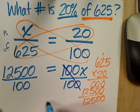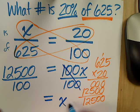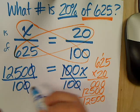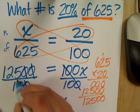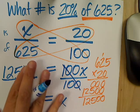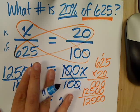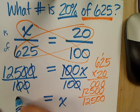My 100 over 100 becomes 1, so I'm left with X here. And then use that shortcut. Take a 0 from top and the bottom and do it again from the top and the bottom. So, what am I left with? 125. 125 over 1, which is written as 125.